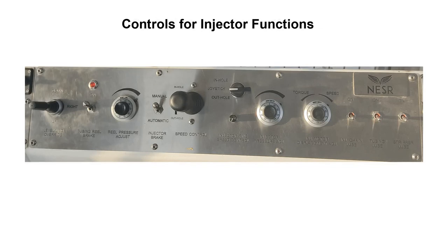Now we will see the controls for injector functions. Here we have the knob for the injector brake. Then we have the direction control knob — if we want to perform the running in, we will use this knob towards the in-hole position, and if we want to pull out of hole, we will turn this knob towards the out-of-hole position.